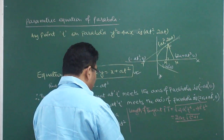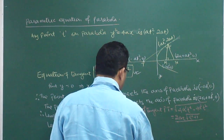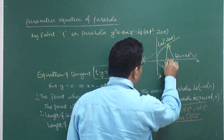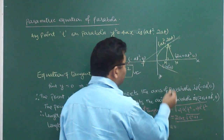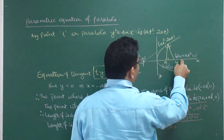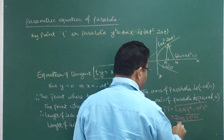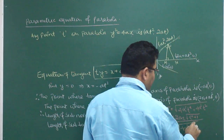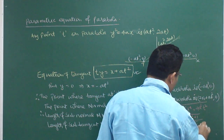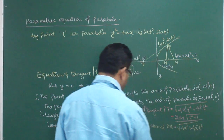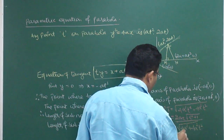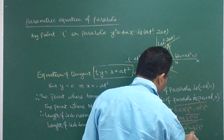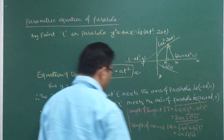Similarly, length of normal PN can be calculated. PN is equal to under root of (2a + at² - at²)² + (2at)², that is under root of 4a² + 4a²t². Taking 2a common, we get 2a·under root(1 + t²). That is the length of normal.